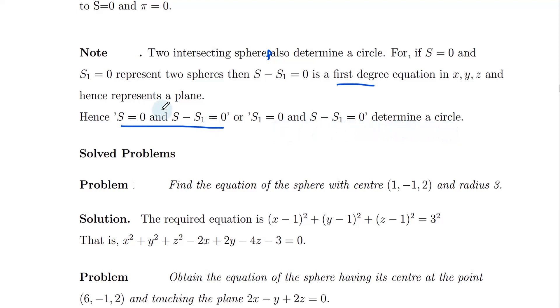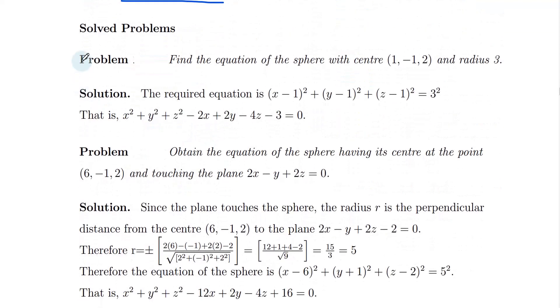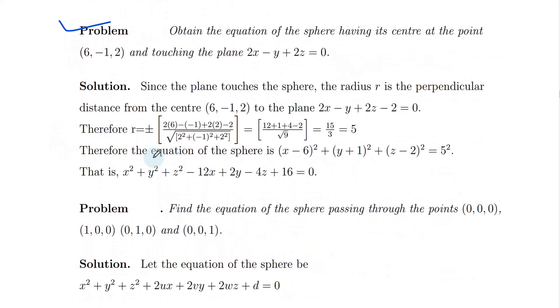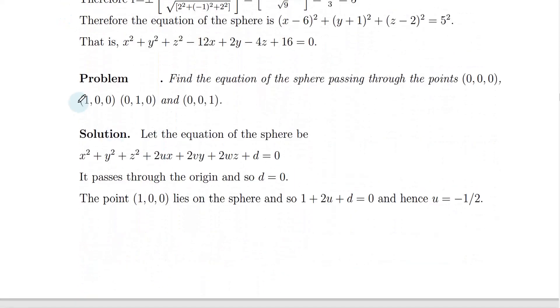Therefore S equals zero and S minus S1 equals zero together determine a circle. Now for the third problem: find the equation of the sphere passing through given points.